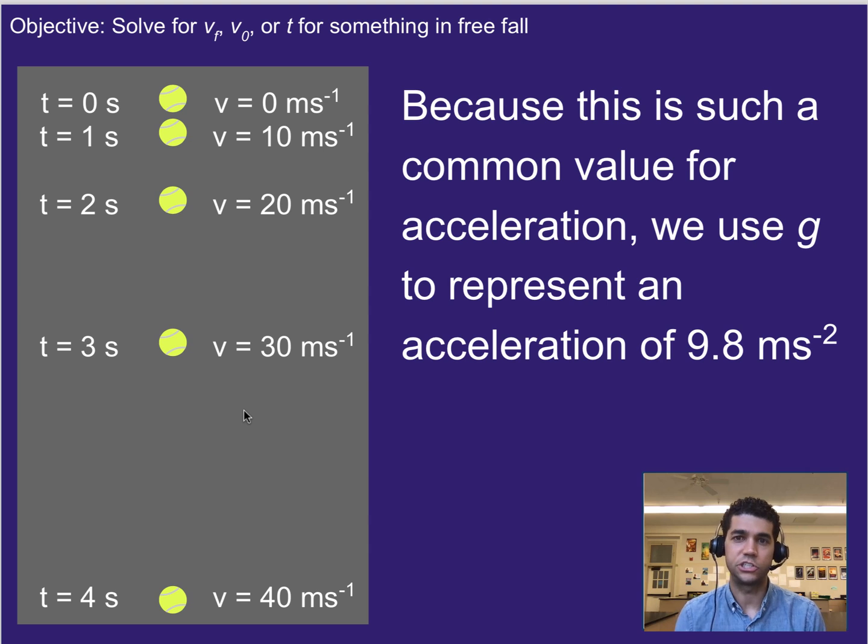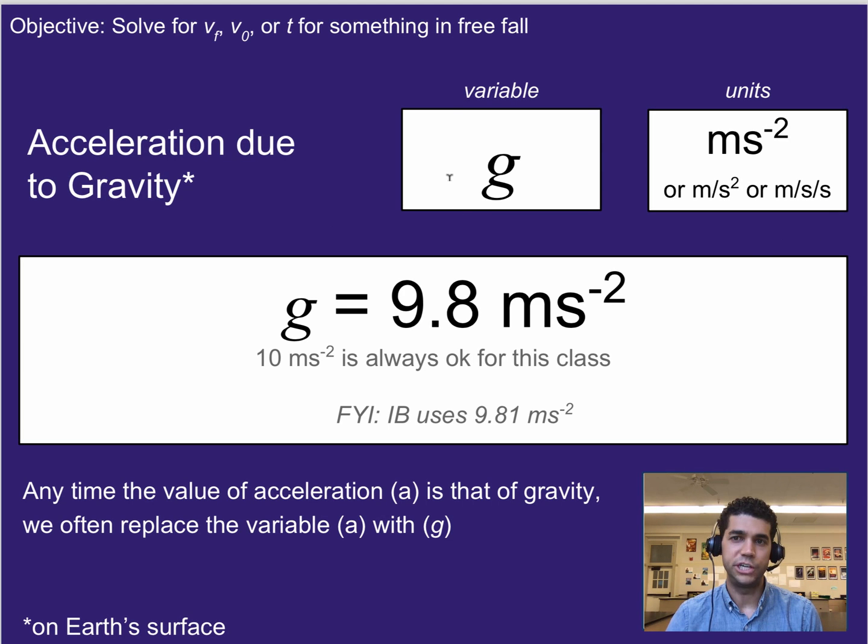Now, because this is such a common value for acceleration, meaning we often talk about things falling, we actually gave it its own variable or letter. So we use lowercase g to represent the acceleration due to free fall. And that acceleration is 9.8 meters per second squared. So g, lowercase g, just a variable.